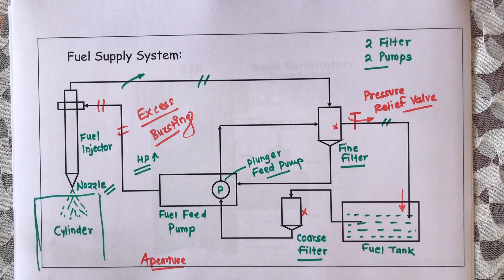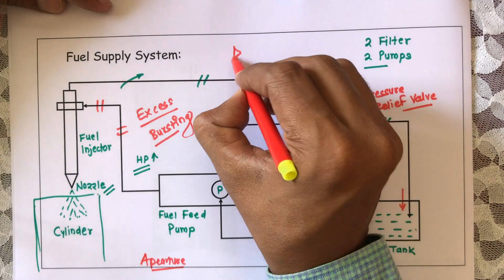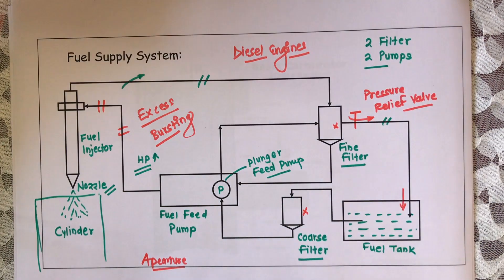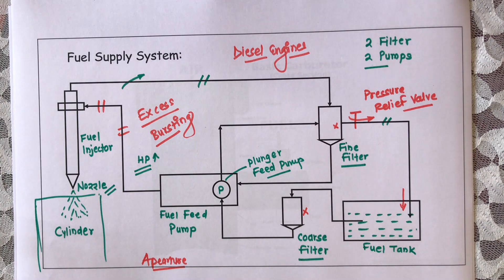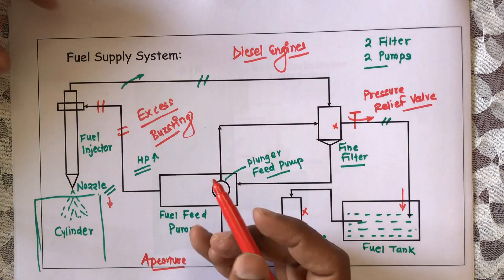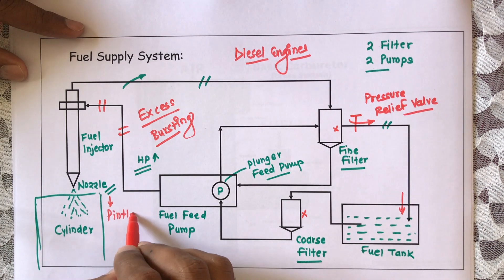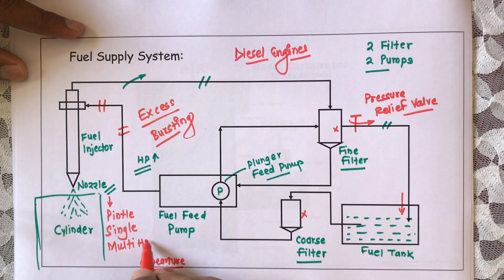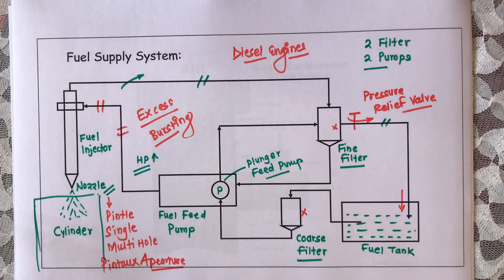You should now understand the function of each component of this fuel supply system. This type of system is generally used in diesel engines. To revise: there are two pumps — the fuel feed pump and the plunger feed pump — and two filters — the coarse filter and the fine filter. Regarding nozzle types, there are four: the pintle hole nozzle, the single hole nozzle, the multi hole nozzle, and the pintox nozzle. Depending upon the application, we can shift from one to another.